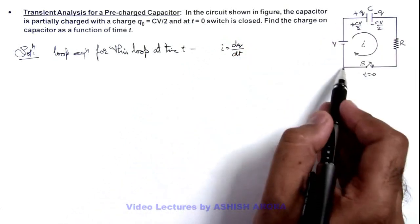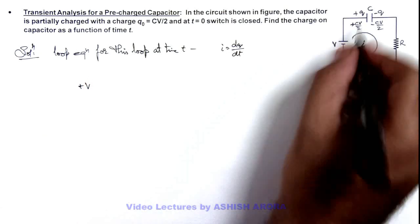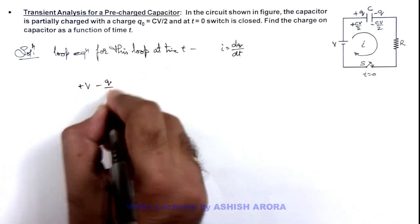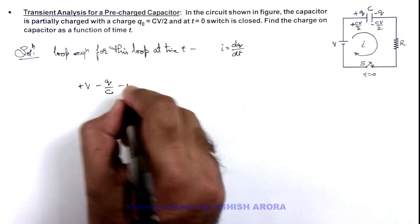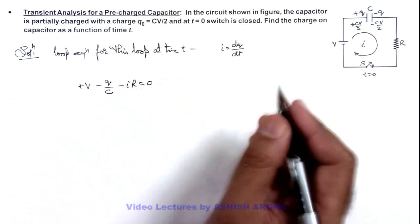From here, if we start, this will be +V minus q/C, and potential drop across resistance is -iR. That is equal to zero for the whole loop.